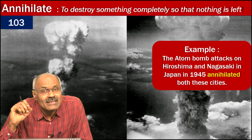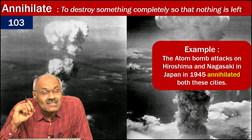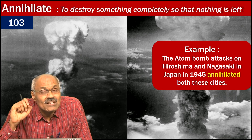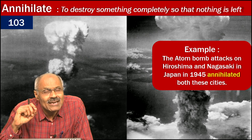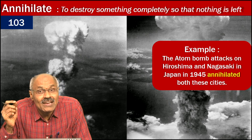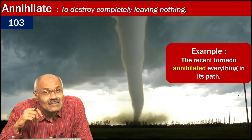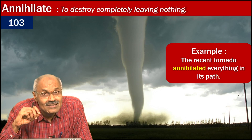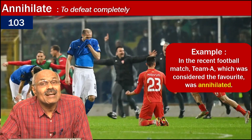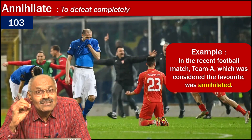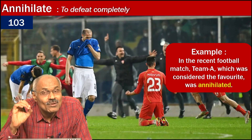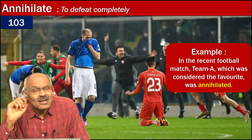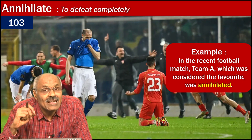The first word is 'annihilate.' If something is destroyed completely — for example, the atom bomb in 1945 in Hiroshima and Nagasaki, Japan — you can say it was annihilated. Similarly, if a tornado is destroying everything in its path, you use annihilate. Also, when a team is defeated completely, like Sri Lanka in the Asia Cup final, you can use annihilate. But when a team wins by only five or six runs, you cannot use this word — it implies complete defeat.